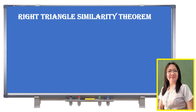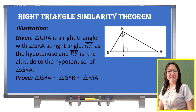To further understand the right triangle similarity theorem, let us have this illustration. Given that triangle GRA is a right triangle with angle GRA as the right angle, segment GA as the hypotenuse, and RY as the altitude to the hypotenuse of triangle GRA.